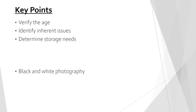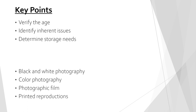This module will begin with black and white photography separated by the different types of support: metal, glass, and paper. Then we will cover color photography, photographic film, and then discuss common printing methods for photographic reproductions.